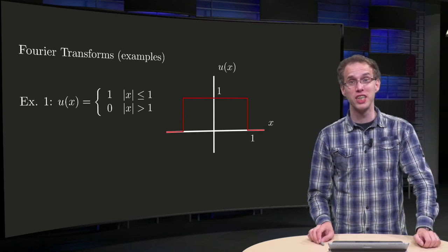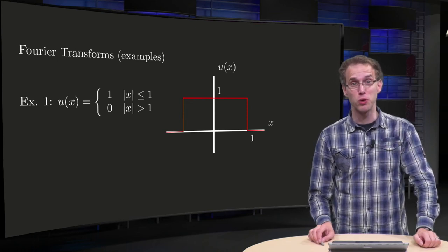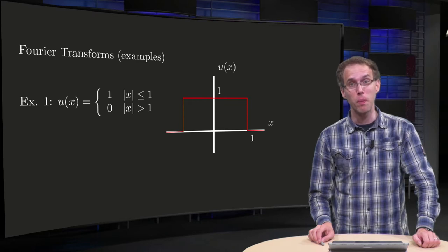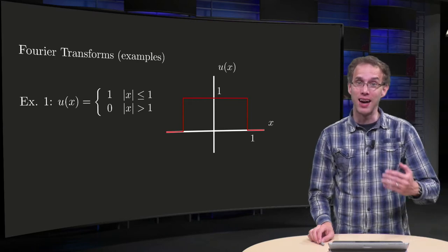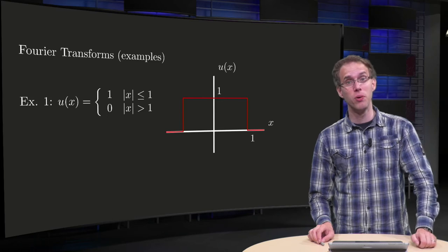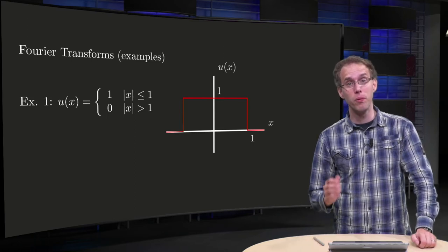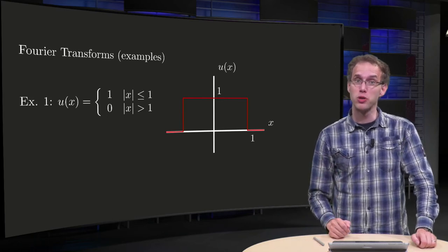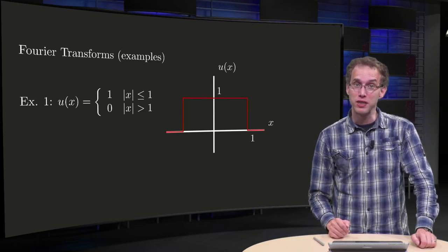For a general function it is hard to compute its Fourier transform, because you need to compute a complex integral. There are a few cases though which are easy — we'll encounter two of them in this video.